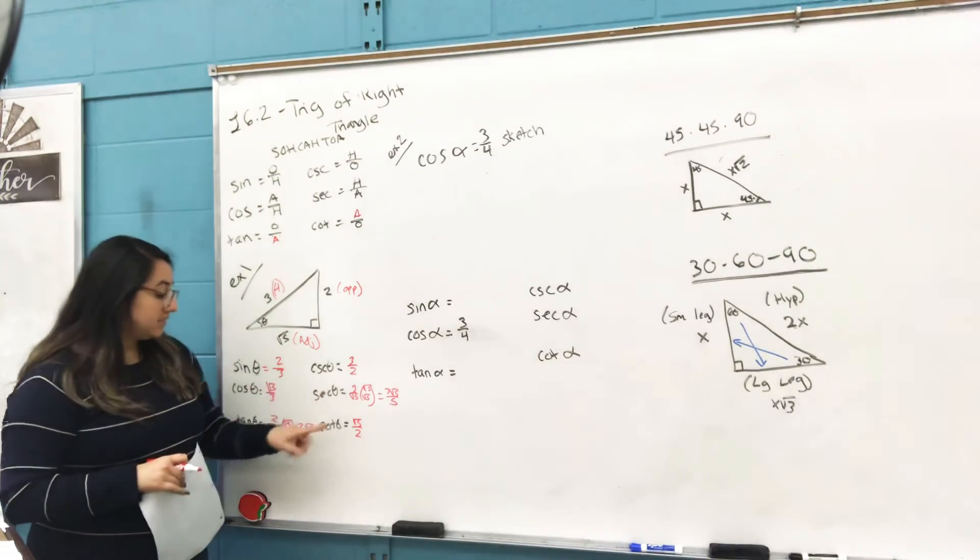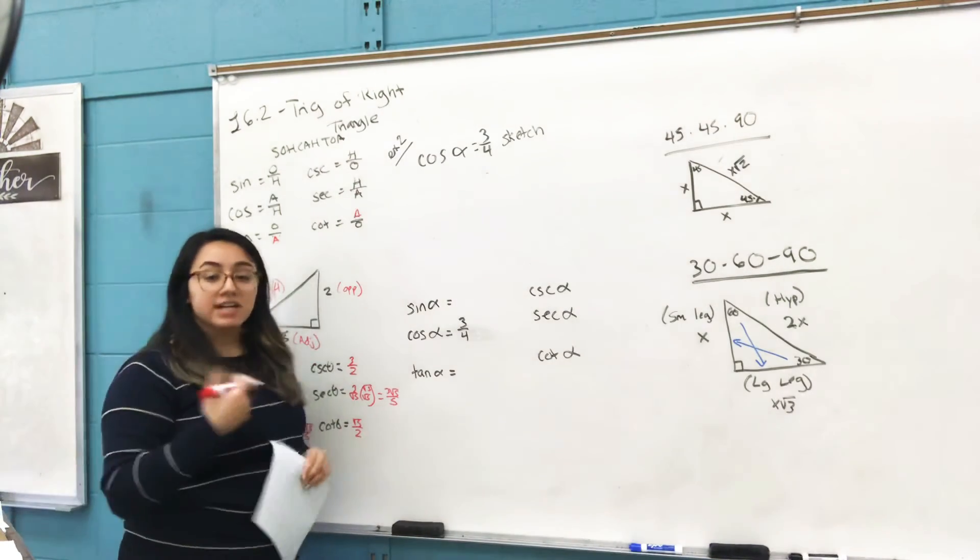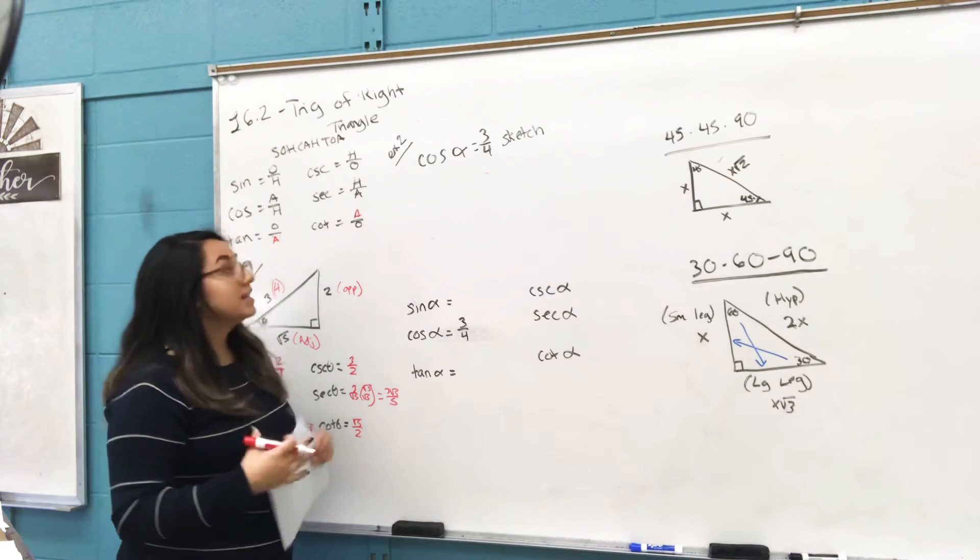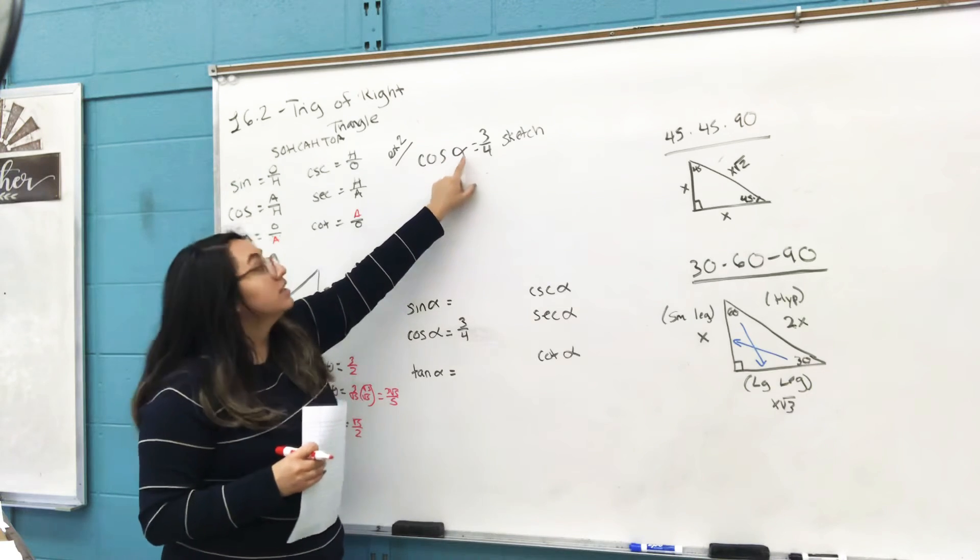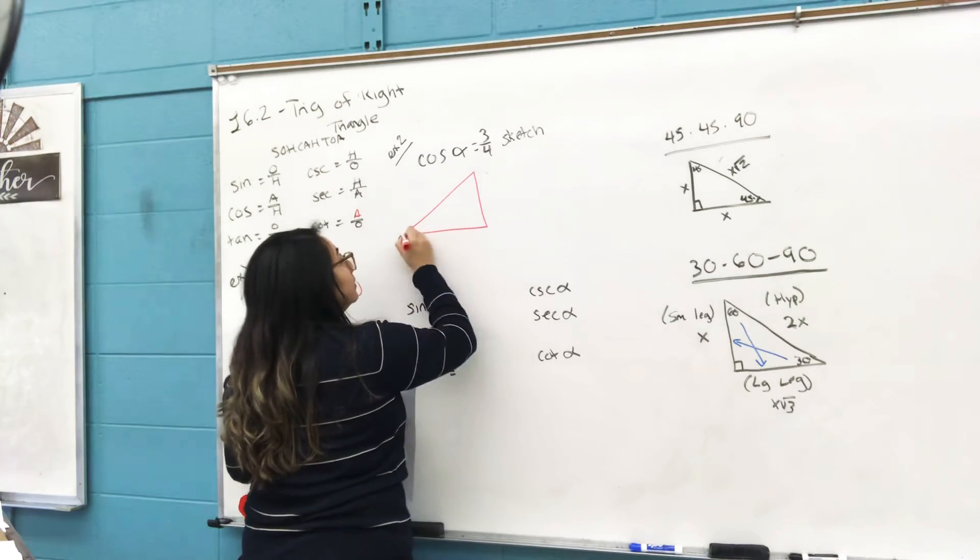So make sure you always look at denominators. If it's a numerator, that's fine. Then that's all your answers here. Example two: they want you to sketch a triangle and find all six trig functions. The only thing that they gave us was that the cosine of this angle is 3/4.